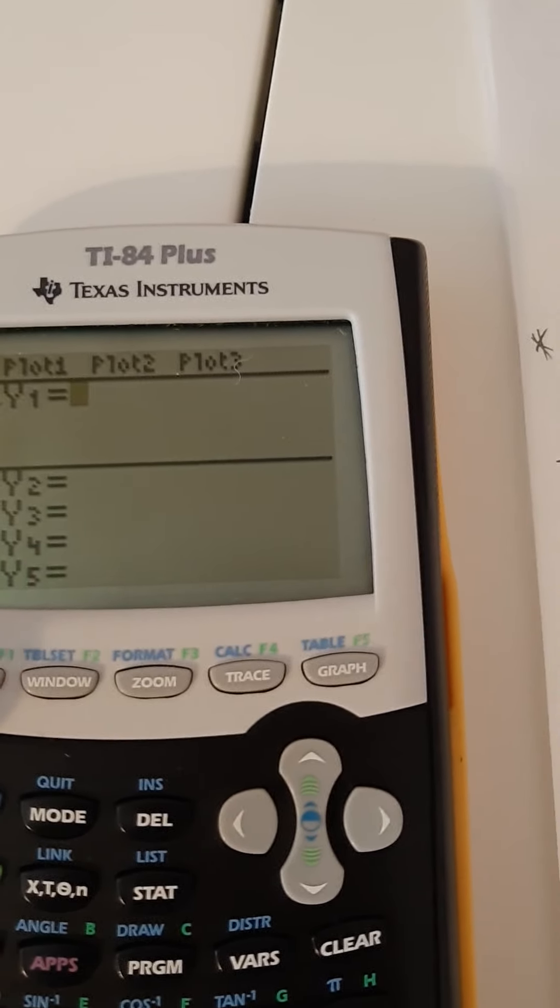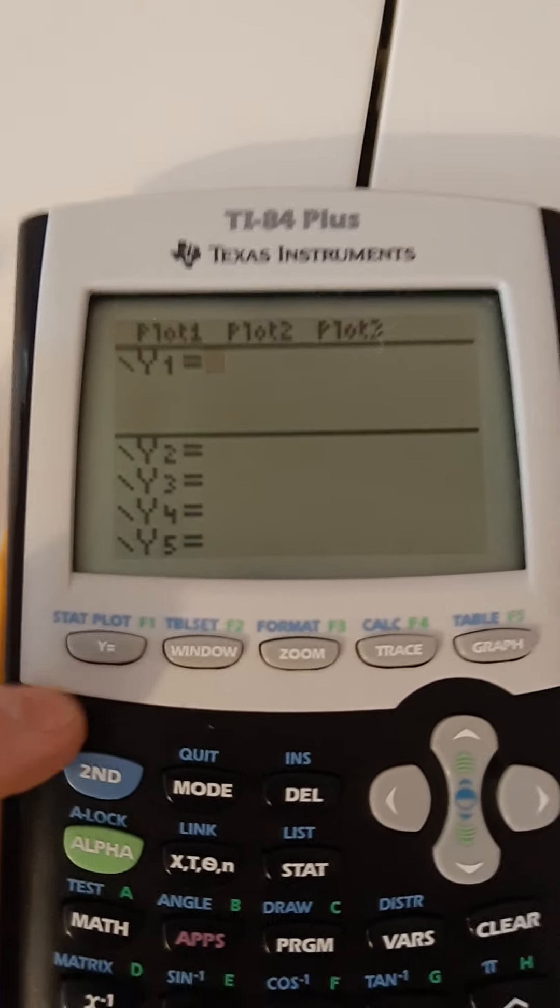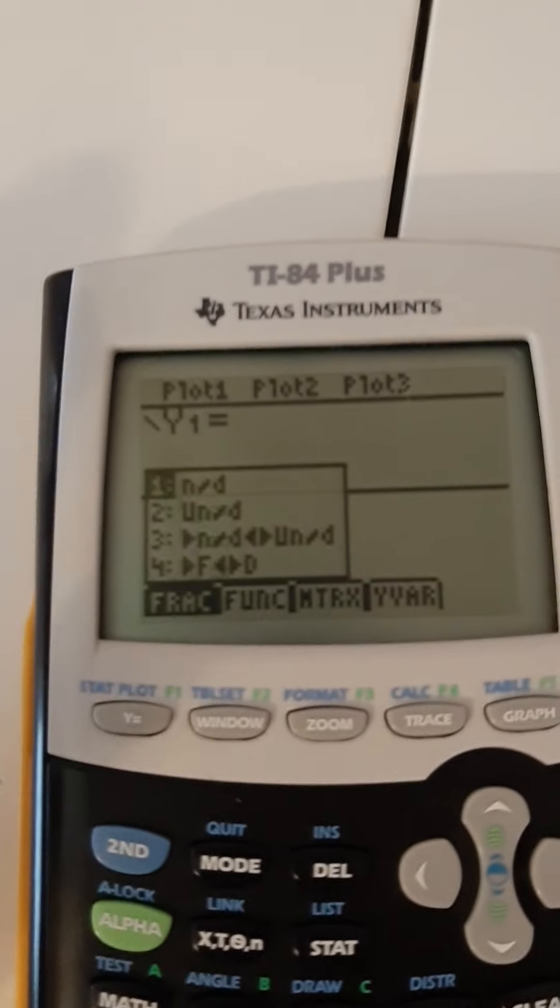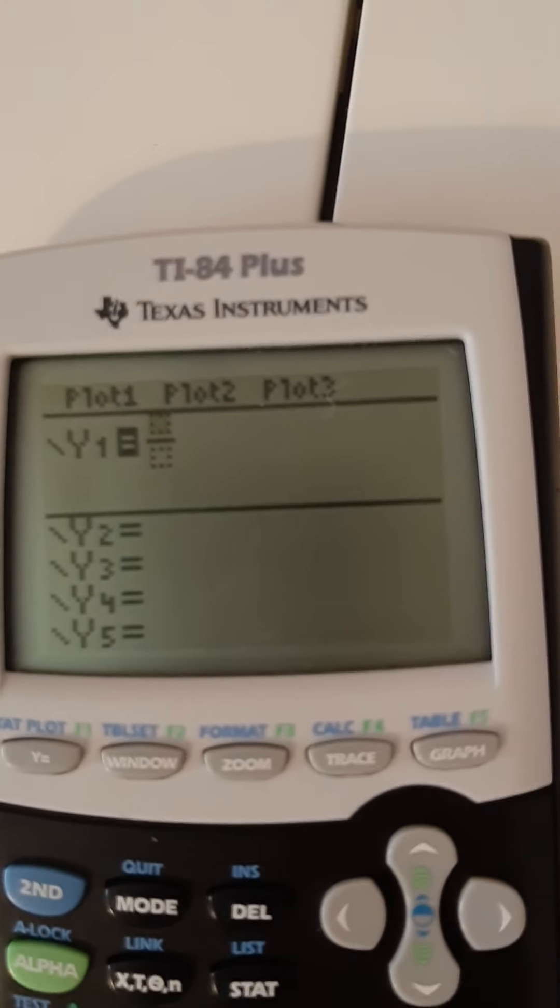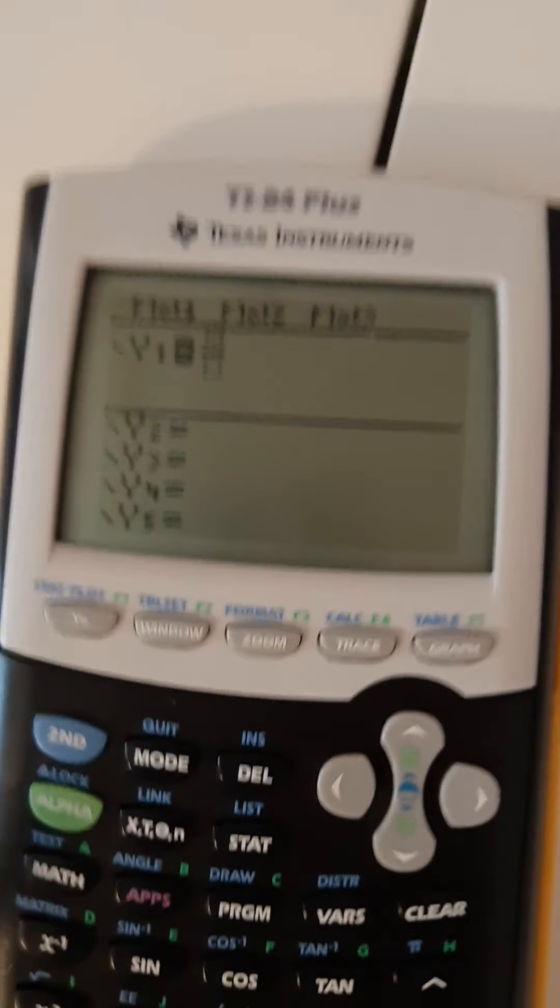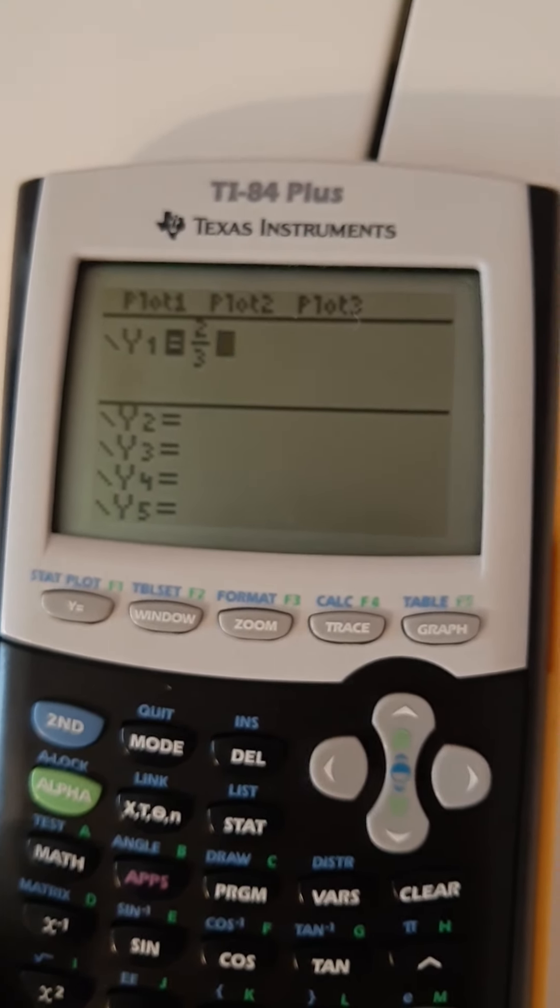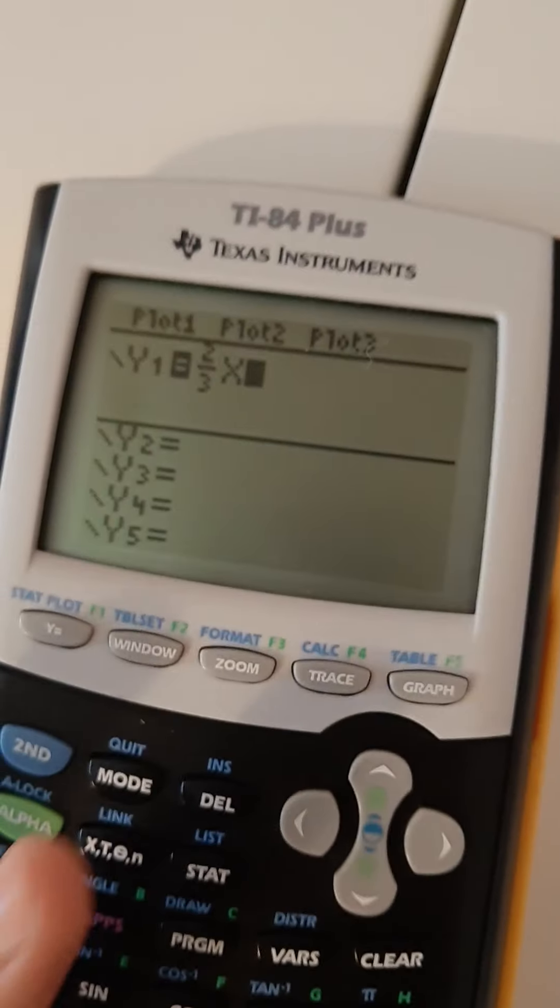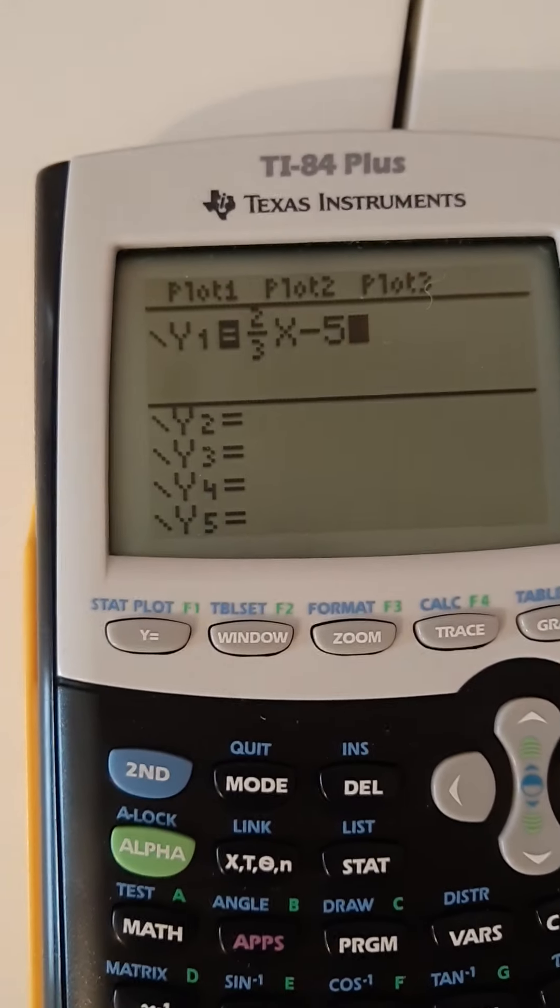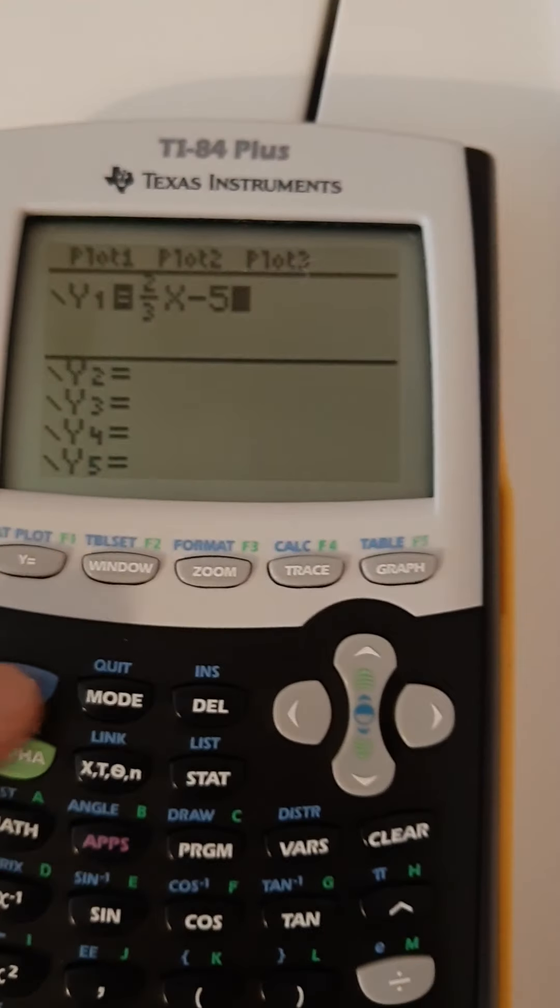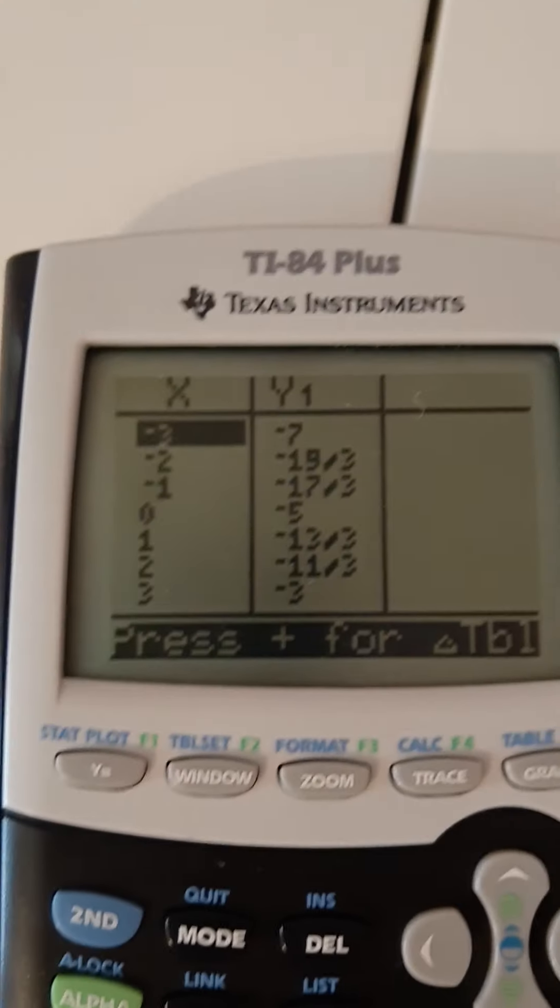Go to y equals, alpha y equals, that gives me the fraction n over d, 2 divided by 3x subtract 5, and when you go to your t chart, hit second graph.